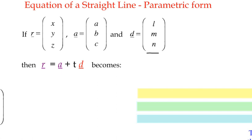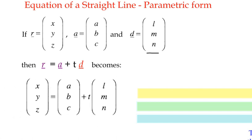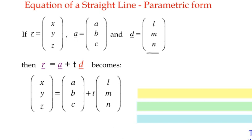So if we swap all of them in, in the right places, we get that R is X, Y, Z equals A, B, C plus T times L, M, N.